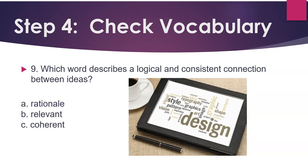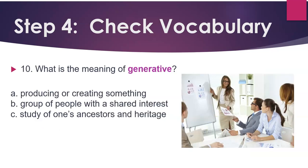Which word describes a logical and consistent connection between ideas? Answer: Coherent. What is the meaning of 'generative'? A: Producing or creating something. B: A group of people with a shared interest. C: Study of one's ancestors and heritage. Answer: Producing or creating something.